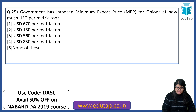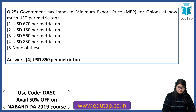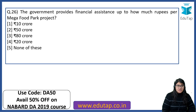Government has imposed a minimum export price for onions at how much USD per metric tonne? All these are memory-based with no concepts, so you can directly memorize — the answer is USD 850 per metric tonne. Next: the government provides financial assistance up to how much rupees per mega food park project? The answer is 50 crore.